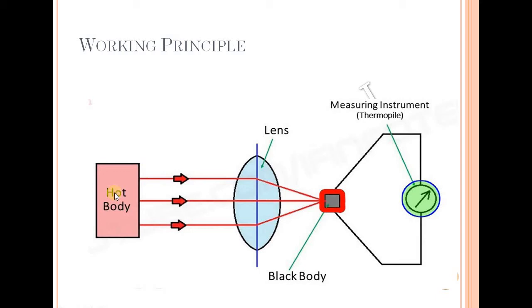The higher-temperature object is not in direct contact. It is not directly touching. You can use a lens to focus radiation onto a detector — it is not a direct body touch. You can use it as a radiator, and you can read it in the meter using front radiation, optical light intensity.